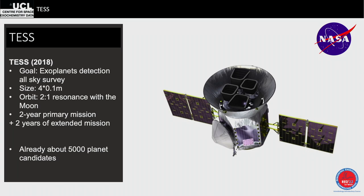Why are they called candidates? You need to observe multiple transit events, and also verify with other techniques — like radial velocity — to confirm the mass is consistent with a planet. Stars have periodic signals too, and a brown dwarf could create a similar transit signature. All candidates need follow-up observations to be confirmed.